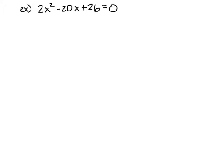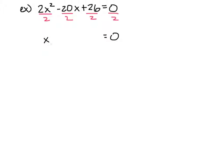Let's consider 2x squared minus 20x plus 26 equals 0, solved by completing the square. The first step is to check if a equals 1 — here a is 2, so I divide everything by 2. Since 0 divided by 2 is still 0, I'm left with x squared minus 10x plus 13 equals 0.